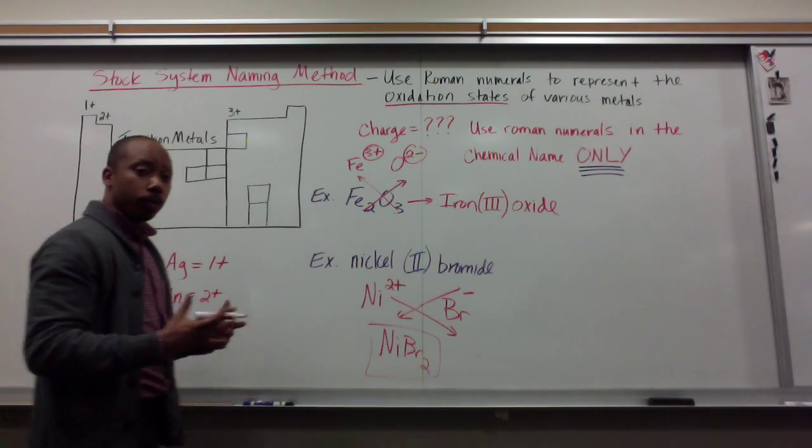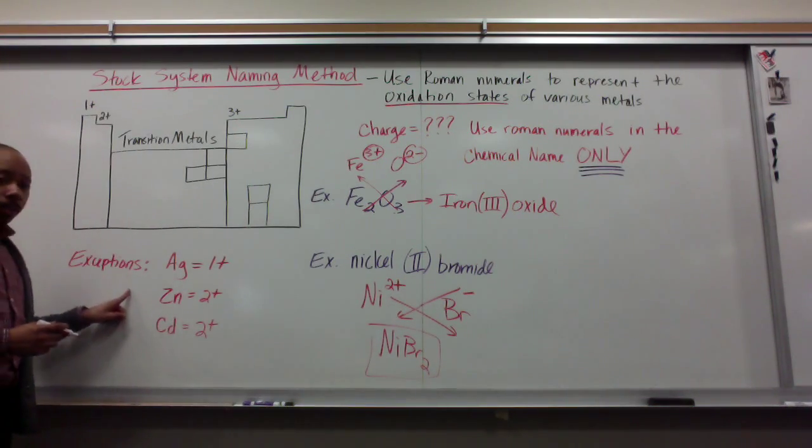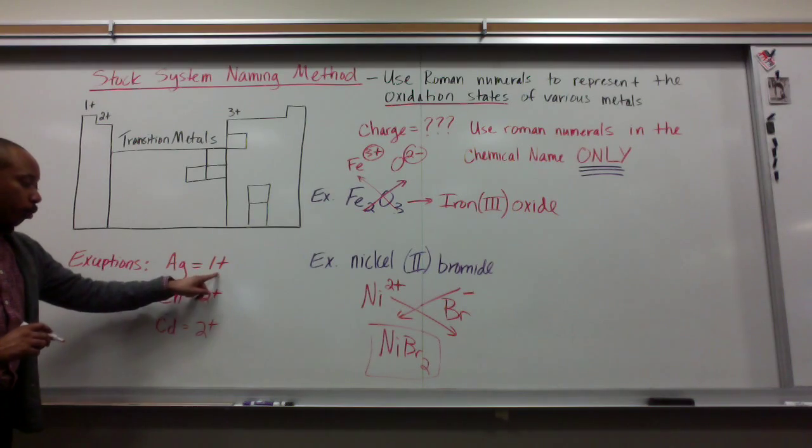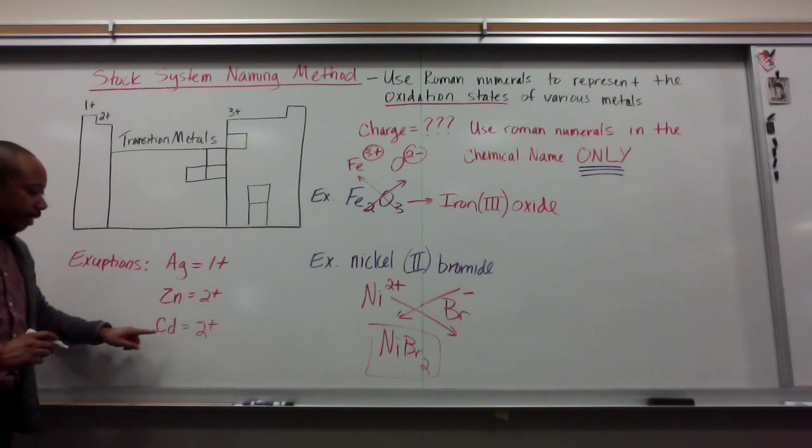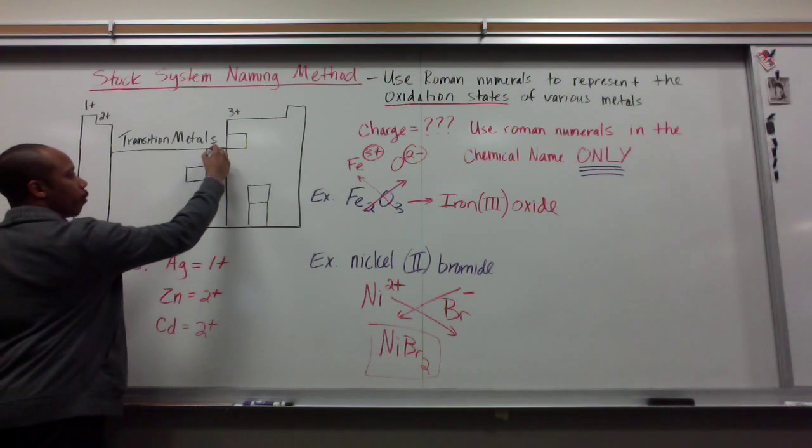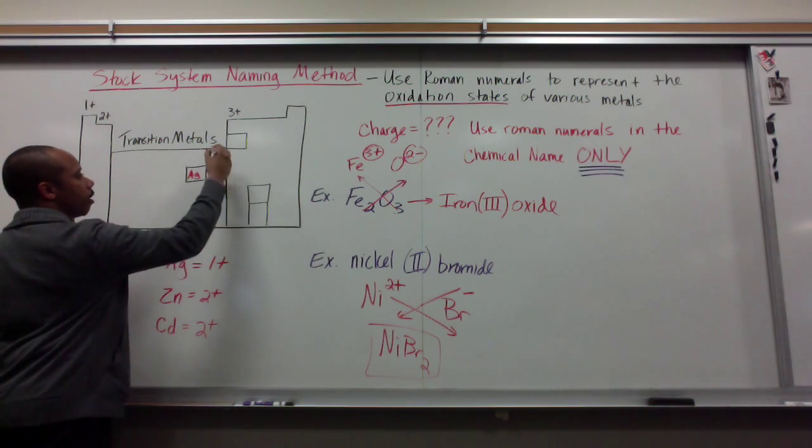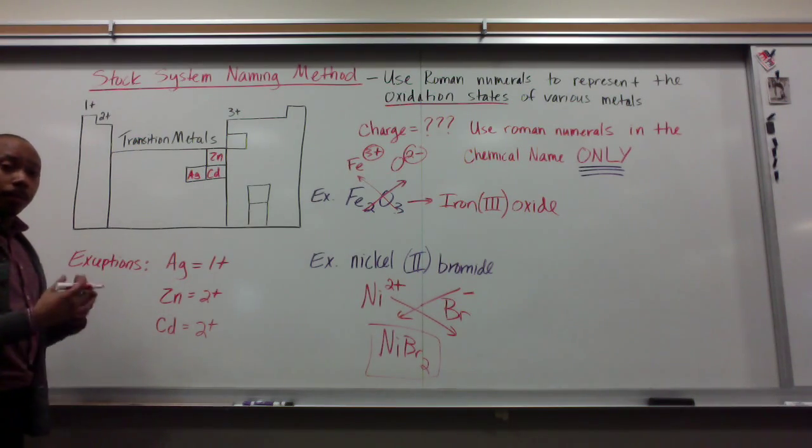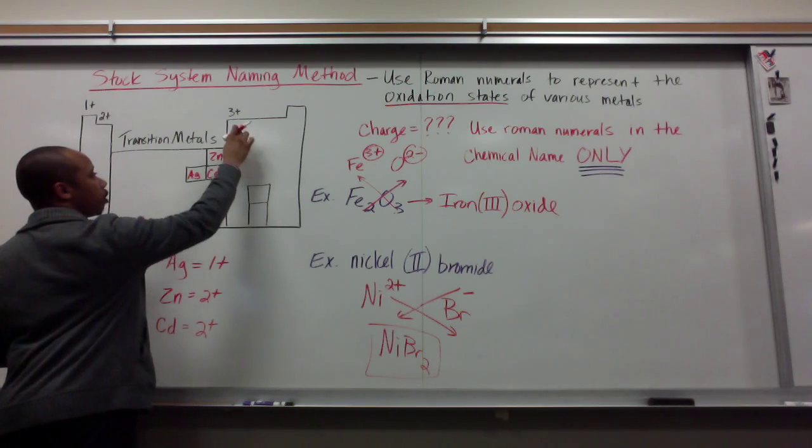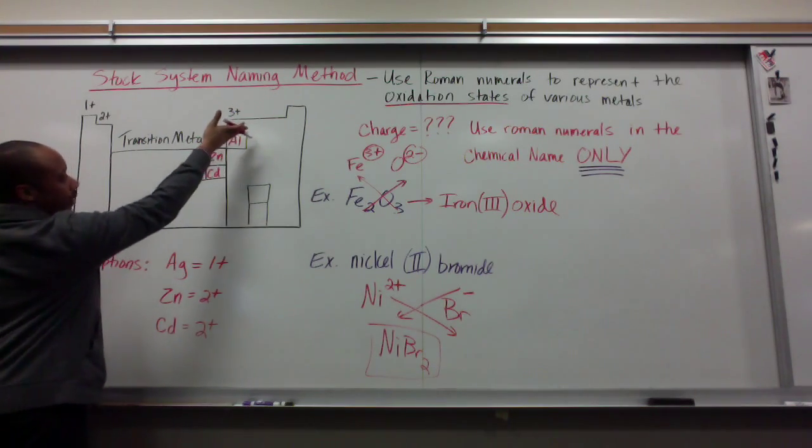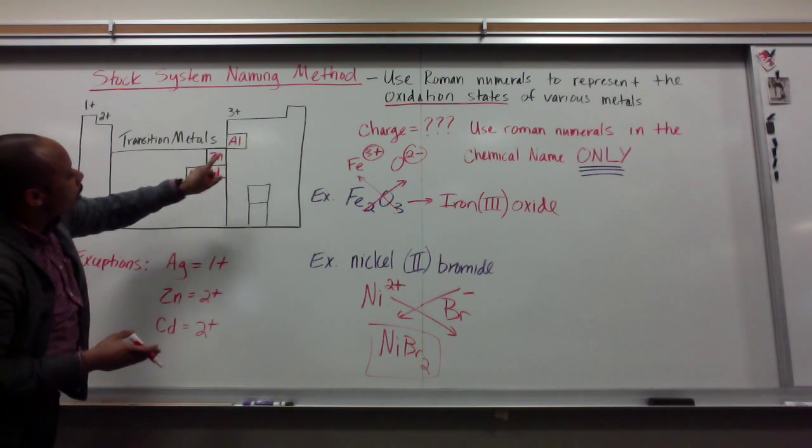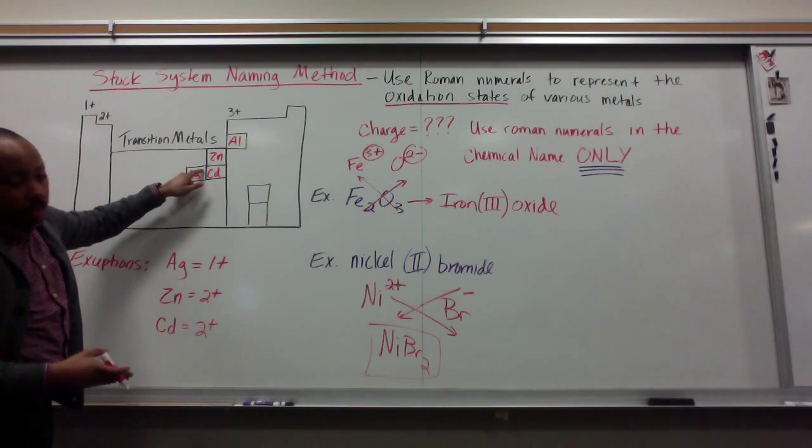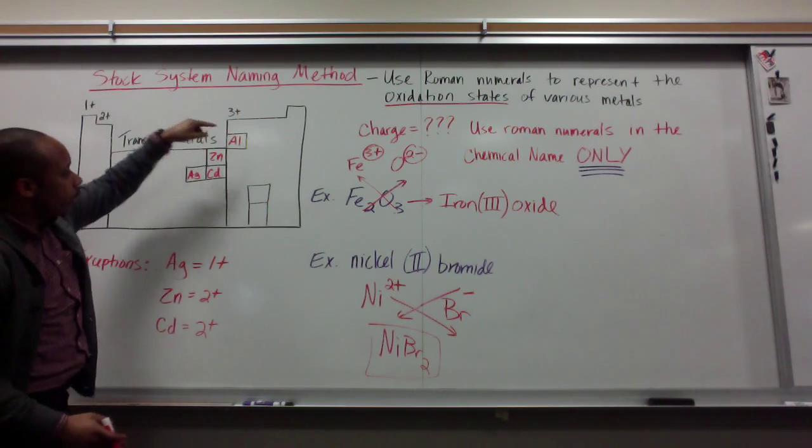There are some exceptions to the rule. There are some elements that always have the same charge, no matter what. They don't transition. Silver is always 1 plus. Zinc is always 2 plus. Cadmium is always 2 plus. One way to remember this is we know that aluminum is here. Aluminum always has a charge of 3 plus. If you just go down the staircase this way, it's aluminum 3 plus, zinc 2 plus, cadmium 2 plus, and silver is 1 plus. So, it's kind of like 3, 2, 1.